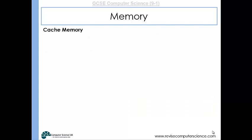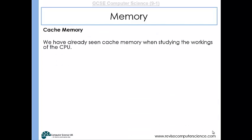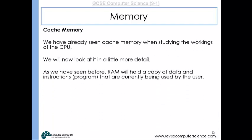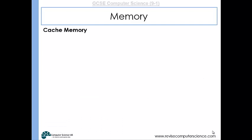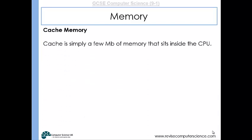Cache memory is the last type of primary memory to be aware of. RAM holds programs that are open at that moment in time and is pretty quick at delivering data to the CPU, but it's not quick enough. The CPU might perform three billion fetch-decode-execute cycles per second and the RAM can't keep up — it can't supply three billion instructions per second. If the CPU only directly accessed instructions from RAM, it would slow things down, and this is where cache plays a very important role.